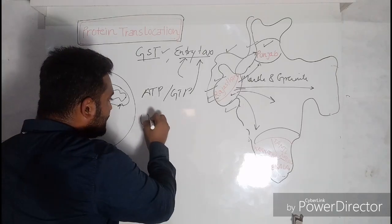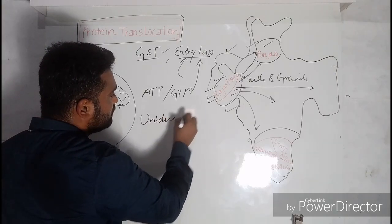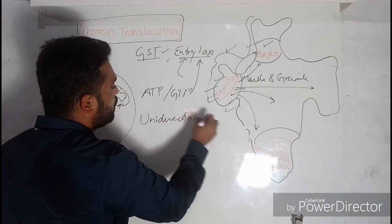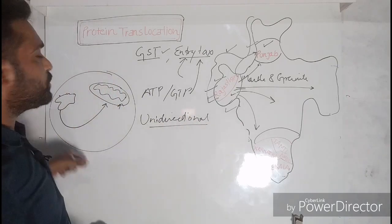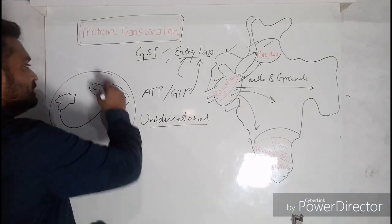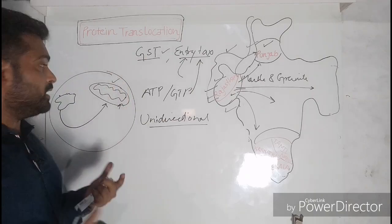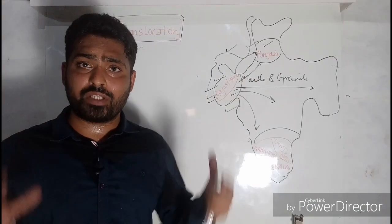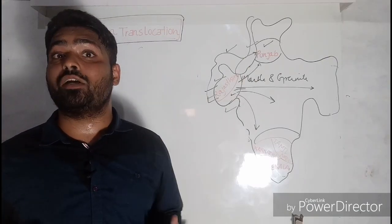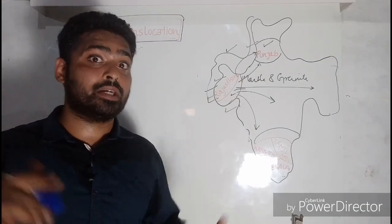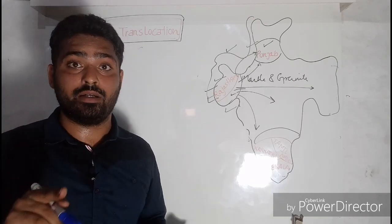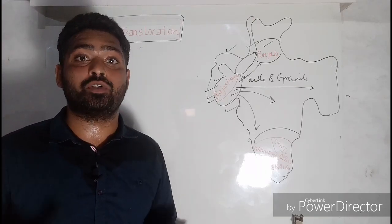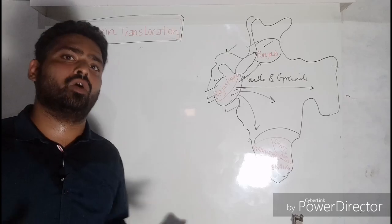So ATP and GTP are used for the unidirectional transport of the proteins from RER to mitochondria, or this can be another organelle also. So now we know that proteins after their synthesis they are not confined to that parental body, that is RER, but they are transported or delivered to their respective location, that is the cellular organelle.